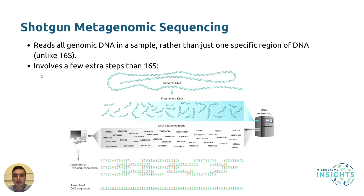Firstly, extract DNA from your sample. Two, tagmentation — a process which cleaves and tags DNA with adapter sequences, priming the fragmented DNA for ligation of molecular barcodes. Three, cleaning up your fragmented DNA sample to remove tagmentation reagent impurities. Four, performing PCR to amplify tagmented DNA samples, as well as adding molecular barcodes to each sample. Five, size selection and cleaning up of the DNA to remove impurities after the PCR steps. Six, pool samples together in equal proportions. Seven, library quantification of the pooled samples. And eight, sequencing pooled samples.